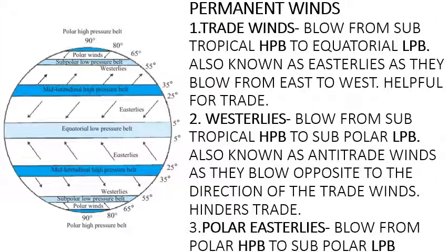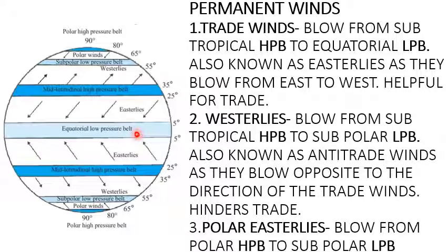Winds are named after the direction or the place from where they blow. This figure is showing permanent winds of the earth's surface. Permanent winds are also known as prevailing winds or planetary winds. First are trade winds — they blow from the subtropical high pressure belt to the equatorial low pressure belt. Also known as easterlies because they blow from the eastern direction and are helpful for trade. These winds are known as north-east trade winds in the northern hemisphere and south-east trade winds in the southern hemisphere.